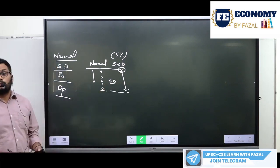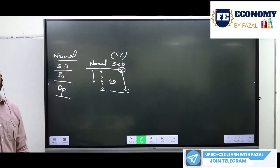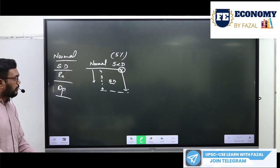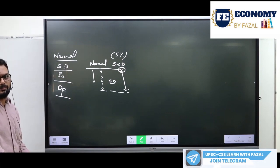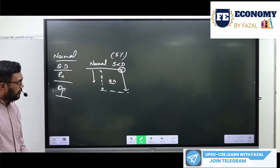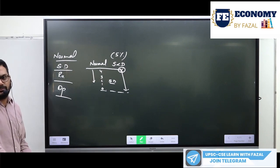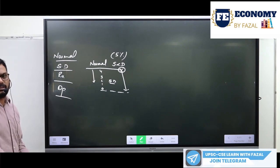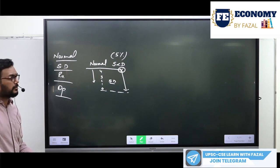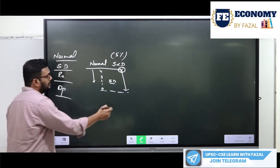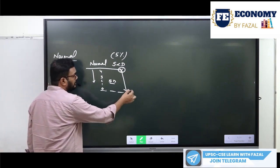Slowdown means slowing down of the growth rate in the country. The key point is that during a slowdown, the growth rate is slowing down but it is still positive. It reaches 0 at the boundary of this phase.